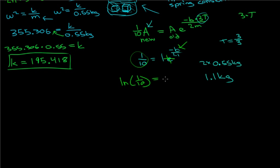And that gets rid of this e here. So then we're left with negative B divided by 1.1. To solve for B, we take the natural log of 1/10 times 1.1, bringing this over and multiplying it.